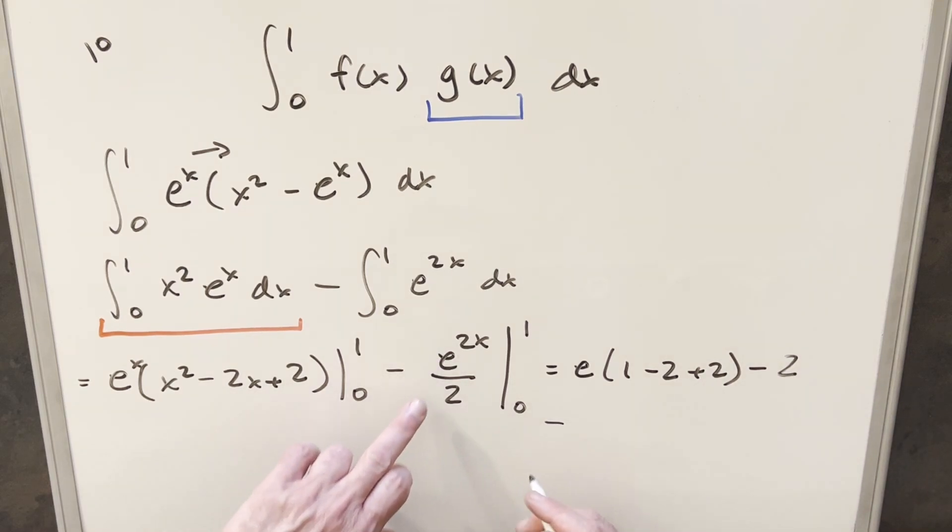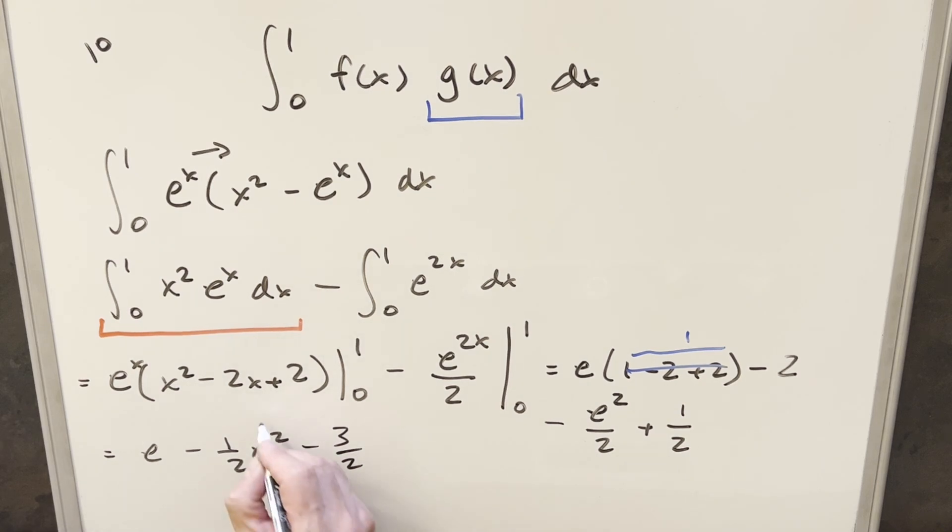And then next, we'll do this part. You plug in a 1, we're going to have minus e squared over 2. And then for the next part, minus times minus is plus. Plug in a 1, and we have 1 half here. But then all this right here, this is just 1, so that goes away. So then we're going to have this e. Over here, we have minus 1 half e squared. Then over here, 1 half minus 2. That's going to be minus 3 over 2, and that's it.